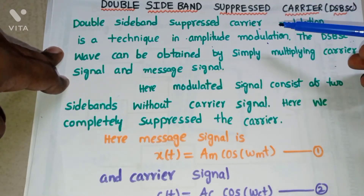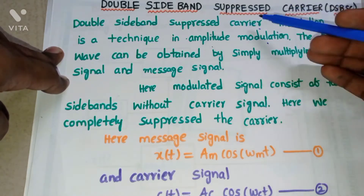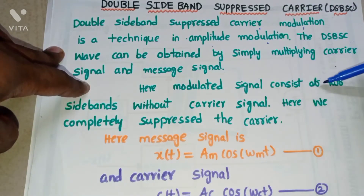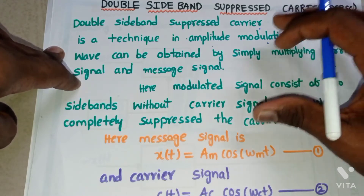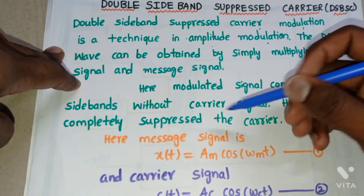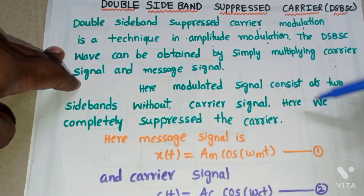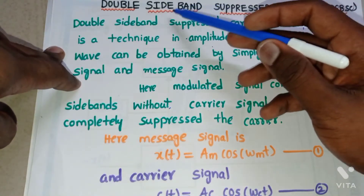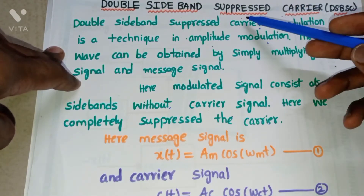By simply multiplying the message signal and carrier signal, we get the DSBSC signal. The modulated signal consists of two sidebands without a carrier — this is a very important point. In the DSBSC modulated wave, we have two sidebands: one is the upper sideband and another is the lower sideband. But there is no carrier signal; we completely suppress the carrier.